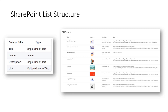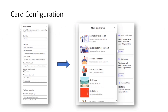The link is multiple lines of text just because sometimes with our apps you have a bigger URL — more than 255 characters. So the hyperlink column doesn't work for this scenario.